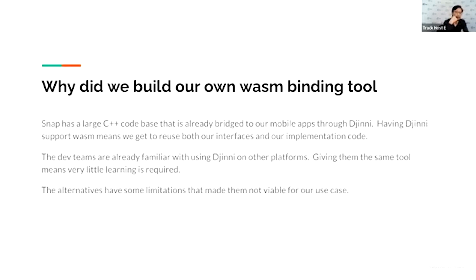Why did we build our own WebAssembly binding tool? There are a few existing tools around, but we have a fairly large code base that is already bridged to our mobile apps through Genie. Having Genie support WebAssembly means we get to use these existing interfaces and existing implementation code with very minimal change. The dev teams are already very familiar with using Genie on other platforms, so giving them exactly the same tool means very little learning is required.